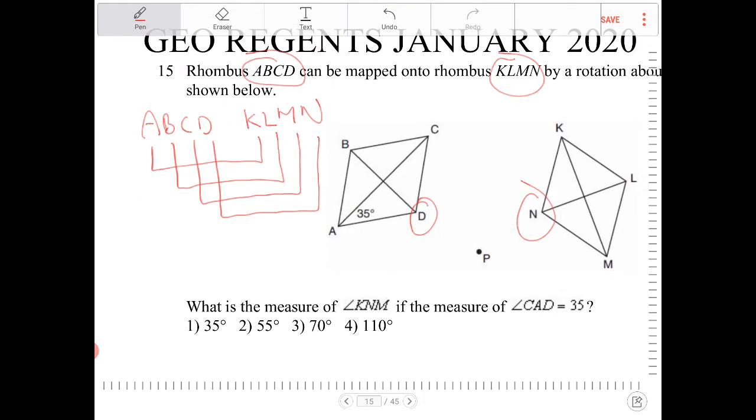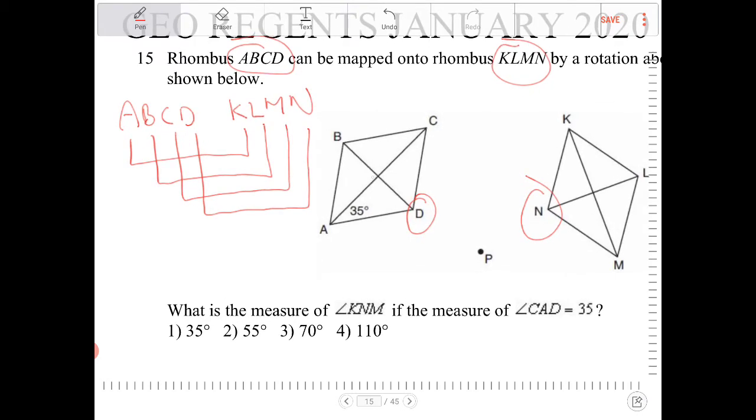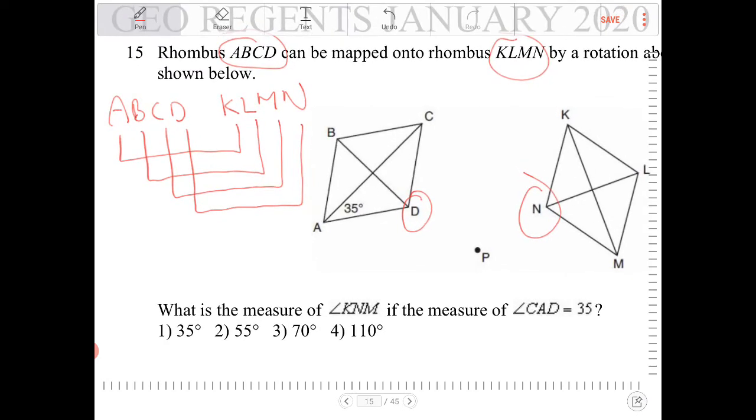and another property involving any rhombus is this: the diagonals are perpendicular bisectors of one another. So that means I end up with four congruent right triangles.